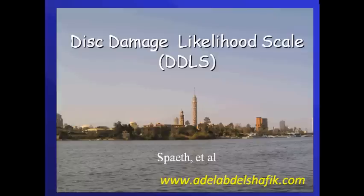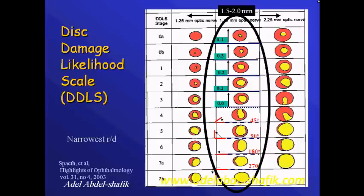One of the ways to describe disc changes was given by Spith and his colleague. They call this the Disc Damage Likelihood Scale. They classify the discs depending on size into three main categories. An average size disc has a diameter between 1.5 to 2 millimeters.